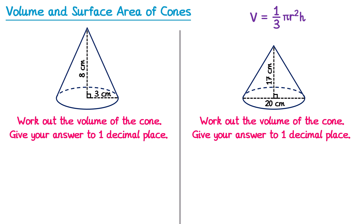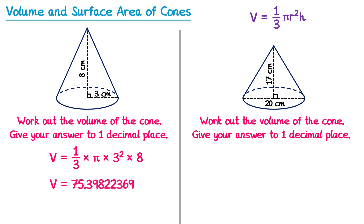For the first one: volume = 1/3 × π × r squared. The radius is 3, so 3 squared, multiplied by h, the perpendicular height, which is 8. Typing this into the calculator and rounding to 1 decimal place gives 75.4 centimetres cubed.